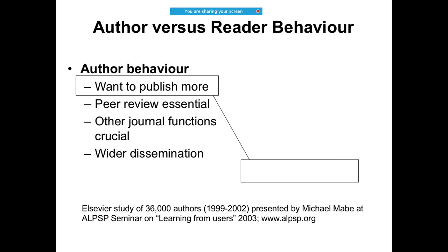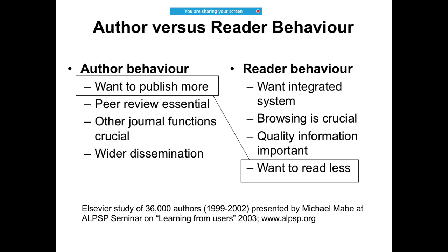After writing a capstone project or an article, you want it to be read by more and more people. There are two types of behavior: the author's behavior and the reader's behavior. As an author, it is important to understand what the reader wants. Being an author, we want to publish more and have wider dissemination, but the reader wants to read as little as possible — they will always say they have a shortage of time.